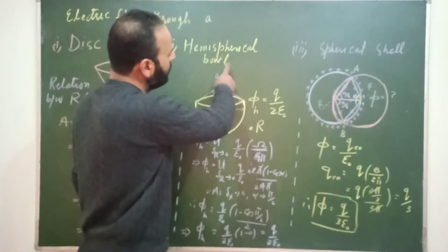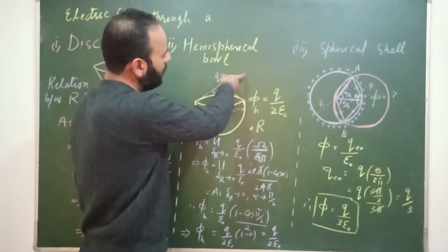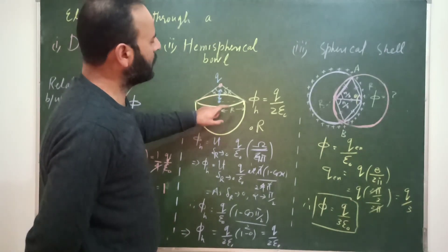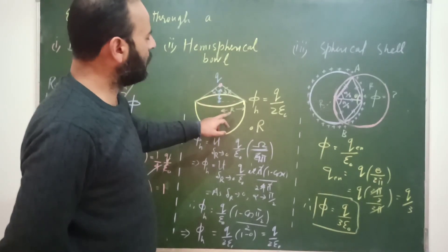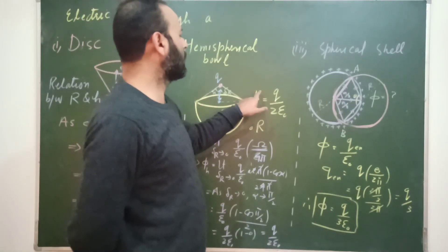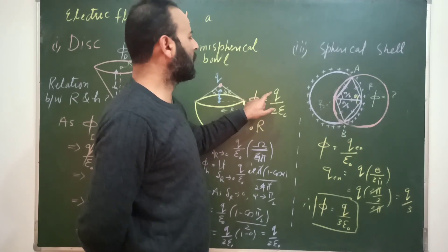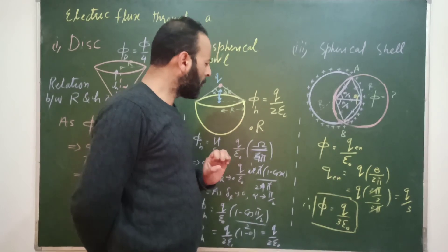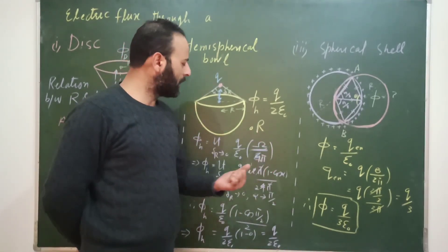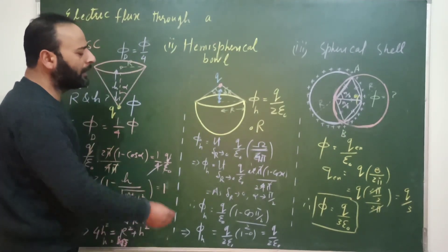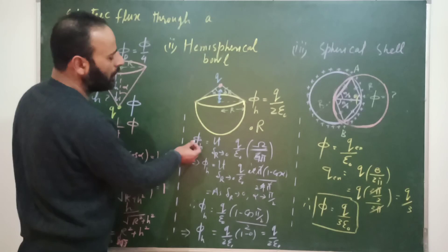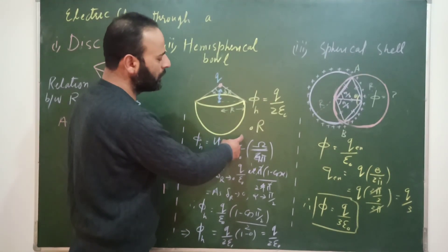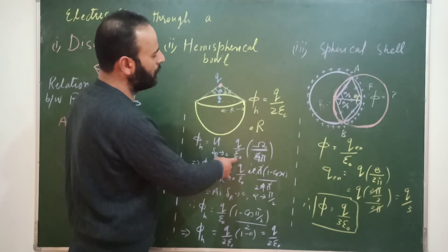Since the charge sits at the boundary between the hemispherical bowl and the complementary spherical shell, the contribution of the charge to the hemispherical bowl alone is only one-half. So we can directly write φ_hemispherical = Q / (2ε₀). Alternatively, we can verify this using the solid angle method.